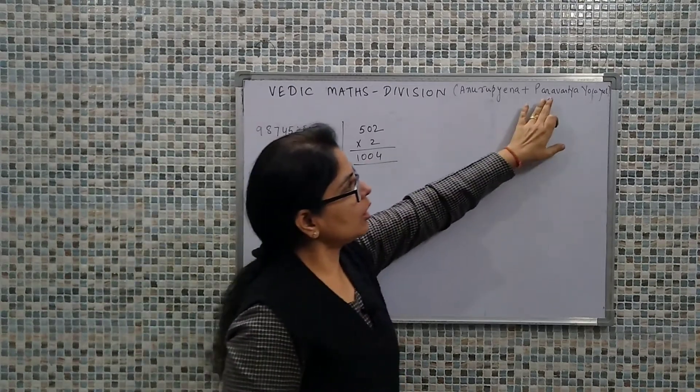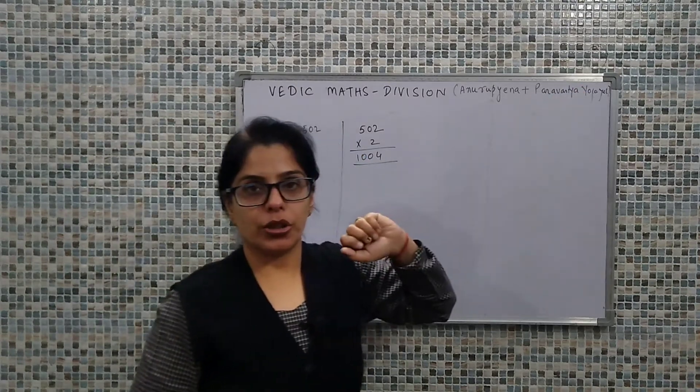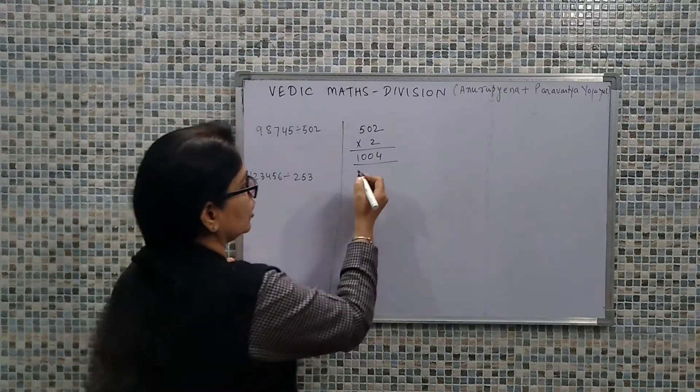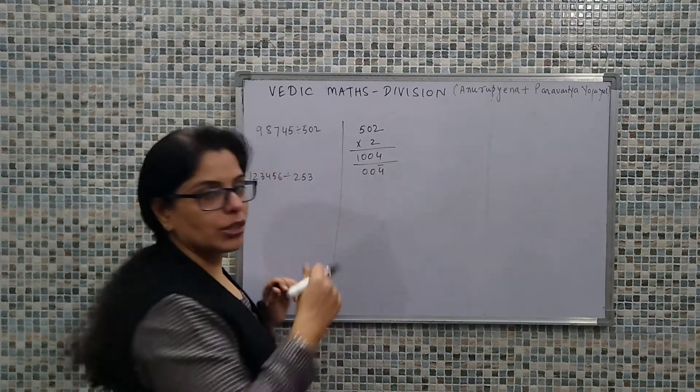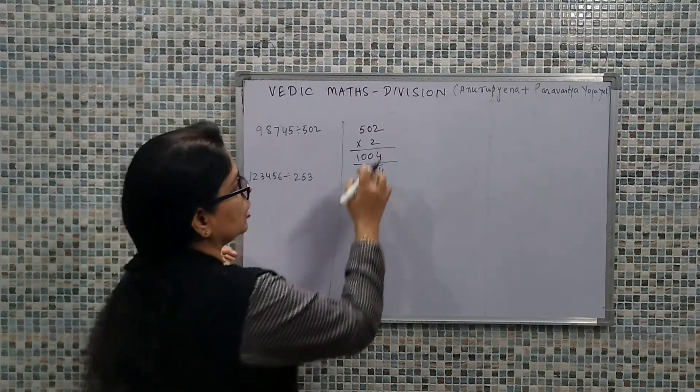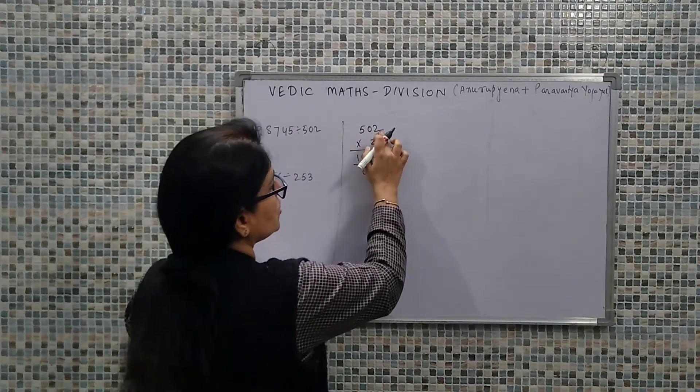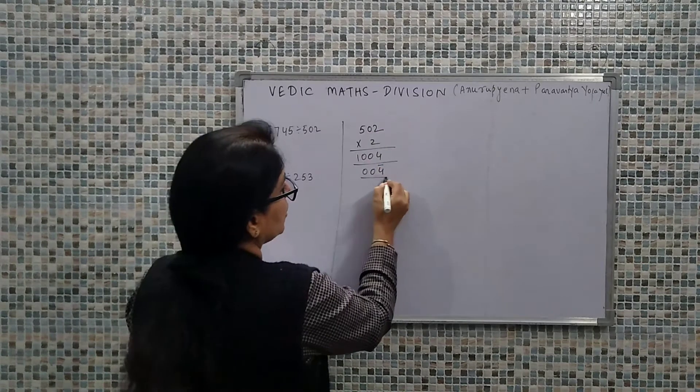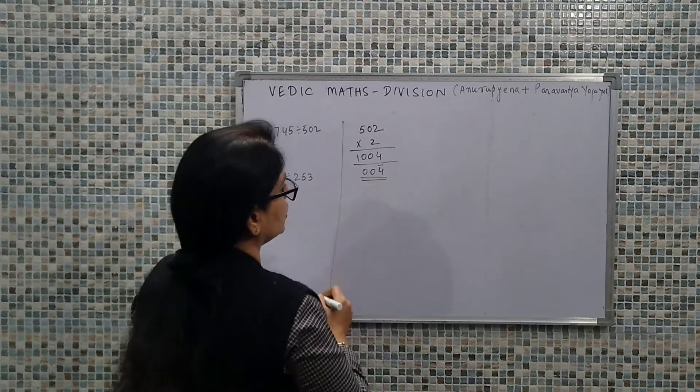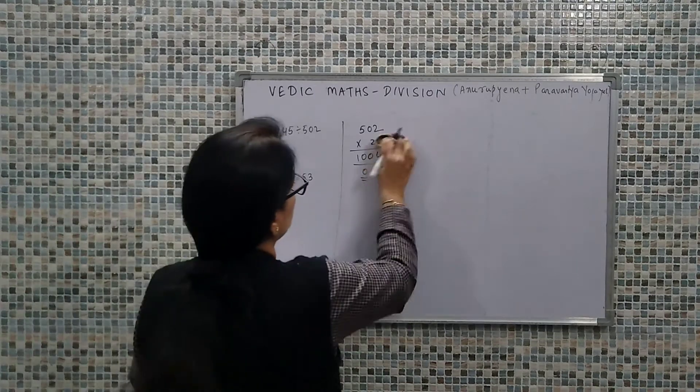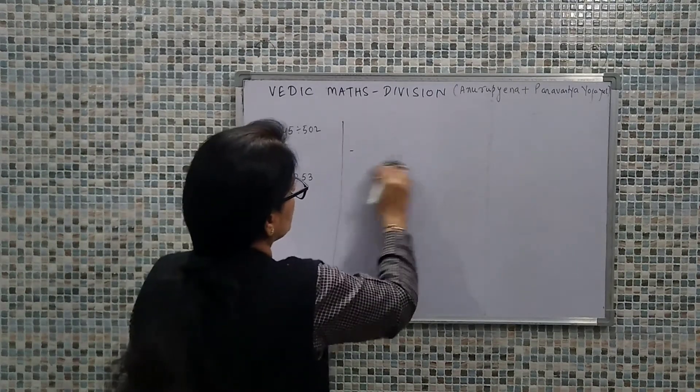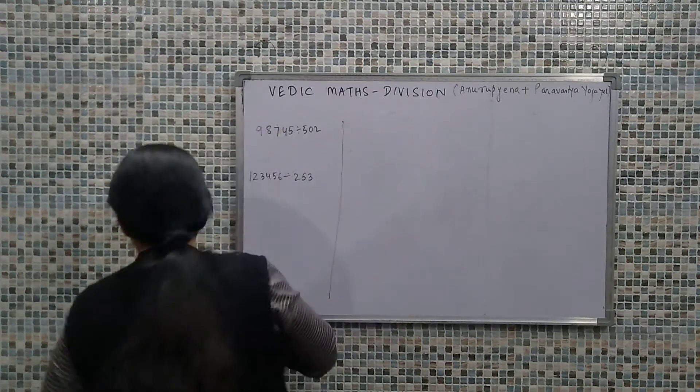After this, we will use Paravartya Yojiyat. What we are going to do is transpose it and then apply it. This means we started with 502, but we would be basically using this value as the divisor. So 004 - this is the value we would be using as the divisor.